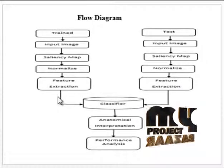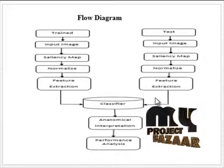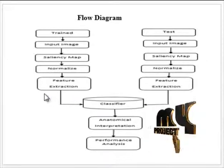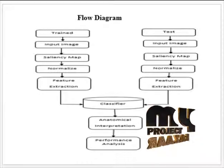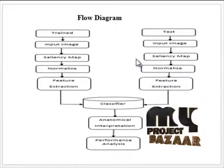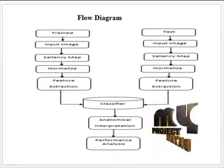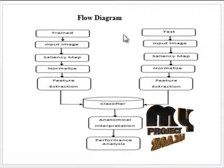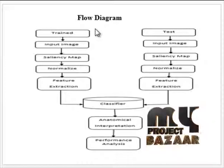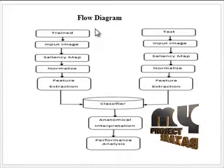There are two sections: the first is the train detection and the other is the test detection. First we perform train detection by training all images in the database. After that, we test each image one by one using the test images. In both the training and testing sections, the processes are the same — the only difference is that in training we use the whole database, while in testing we process images one by one.